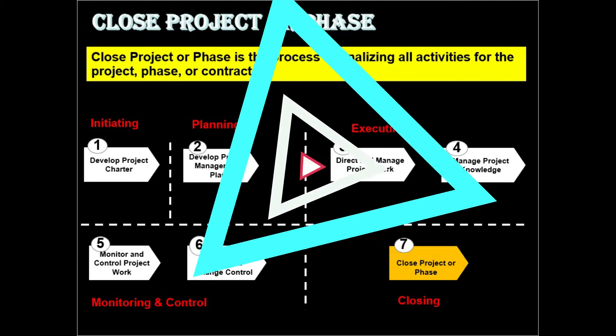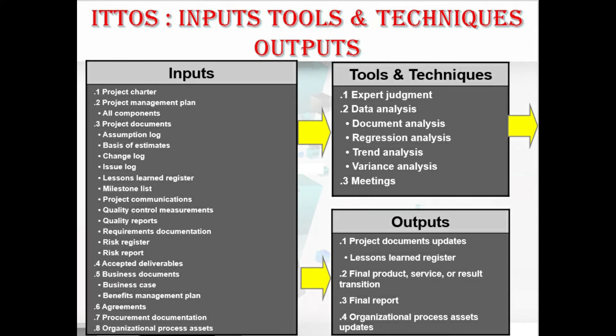Let's move to the ITTOs of this process. For inputs, we have the project charter, the project management plan which contains all its components, and the project documents which contain the assumption log, basis of estimates, change log, issue log, lessons learned register, milestones list, project communications, quality control measurements, quality reports, requirements documentation, risk register, and risk report. We also have accepted deliverables, business documents containing the business case and benefits management plan, agreements, procurement documentation, and organizational process assets.